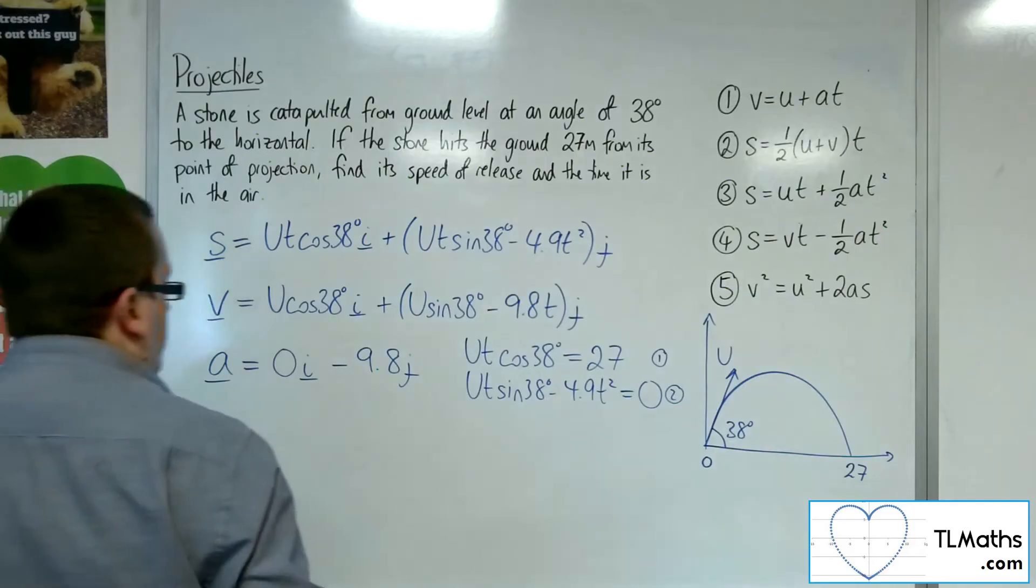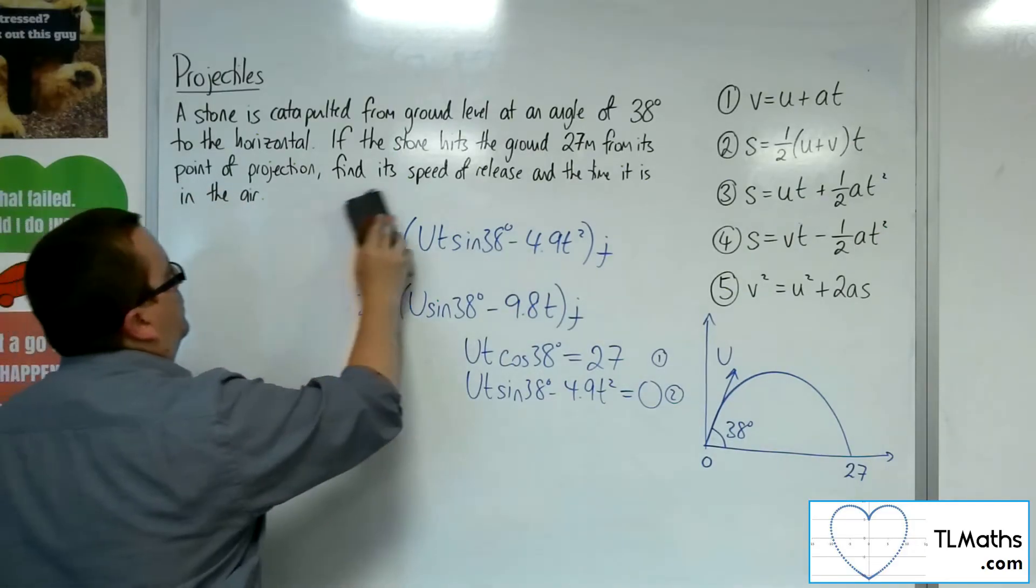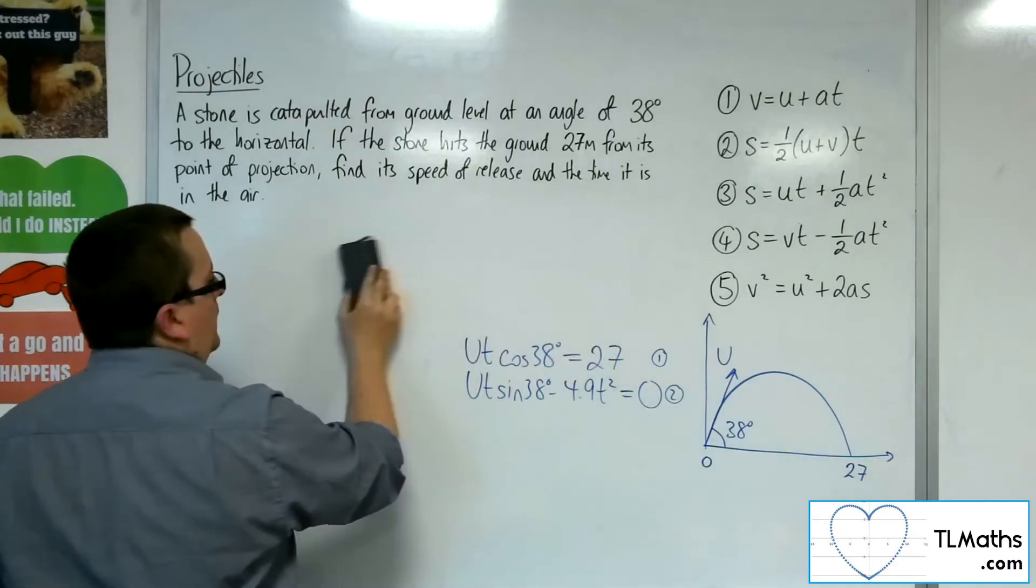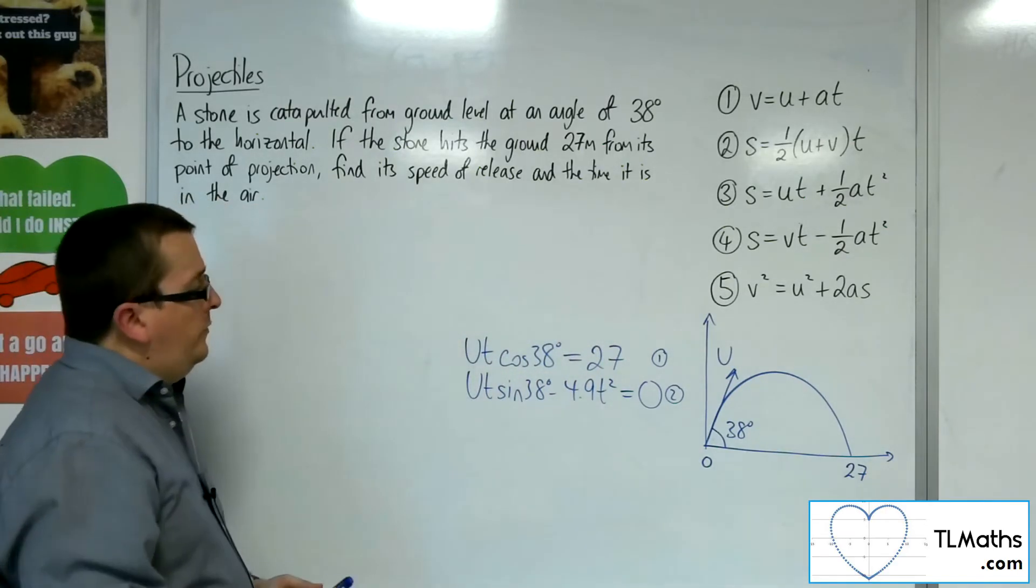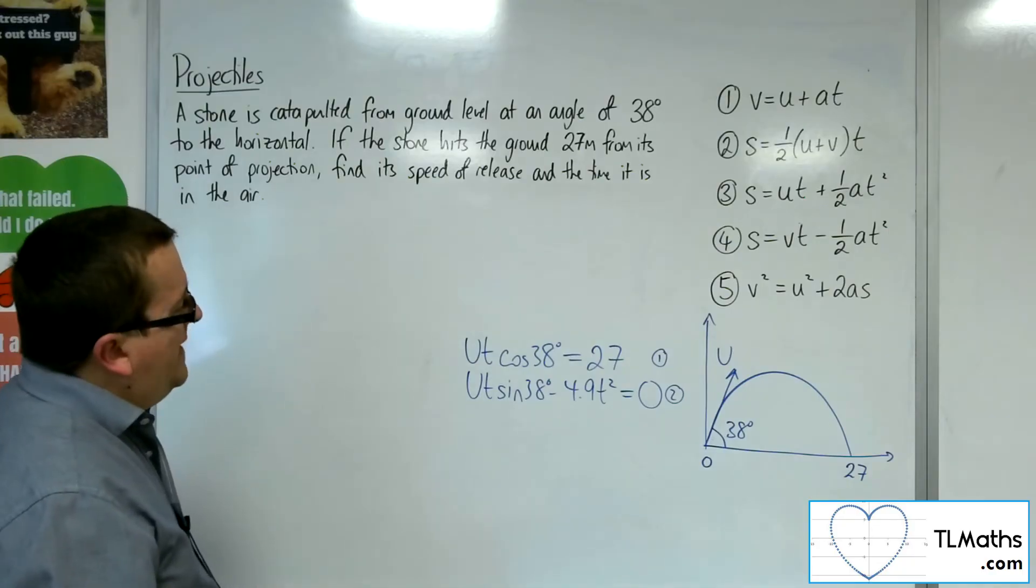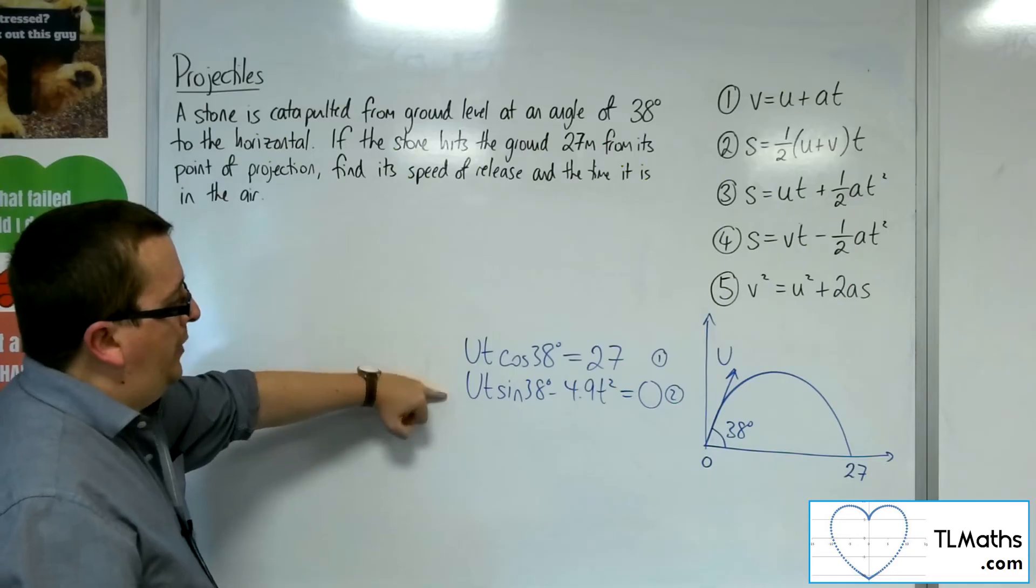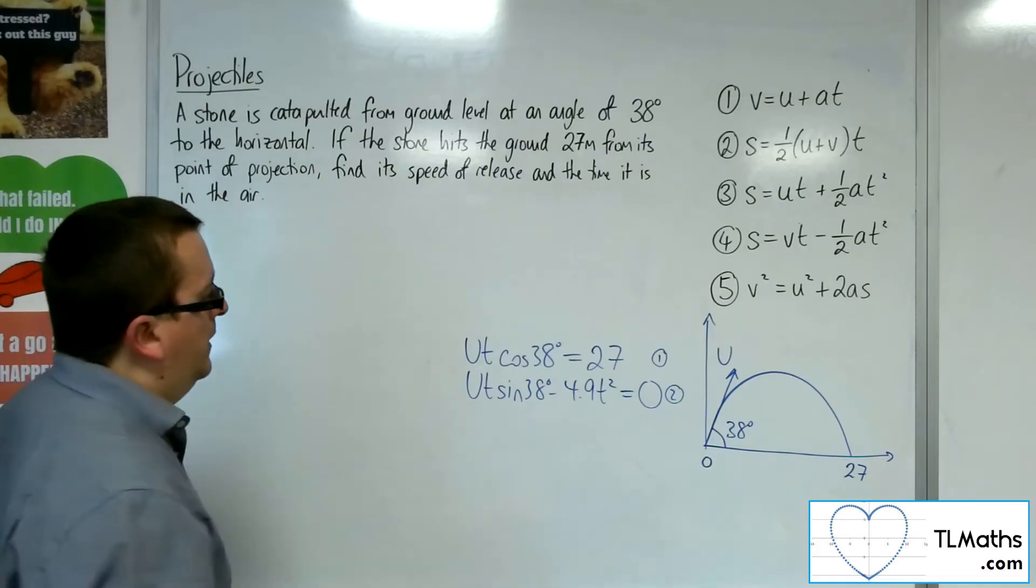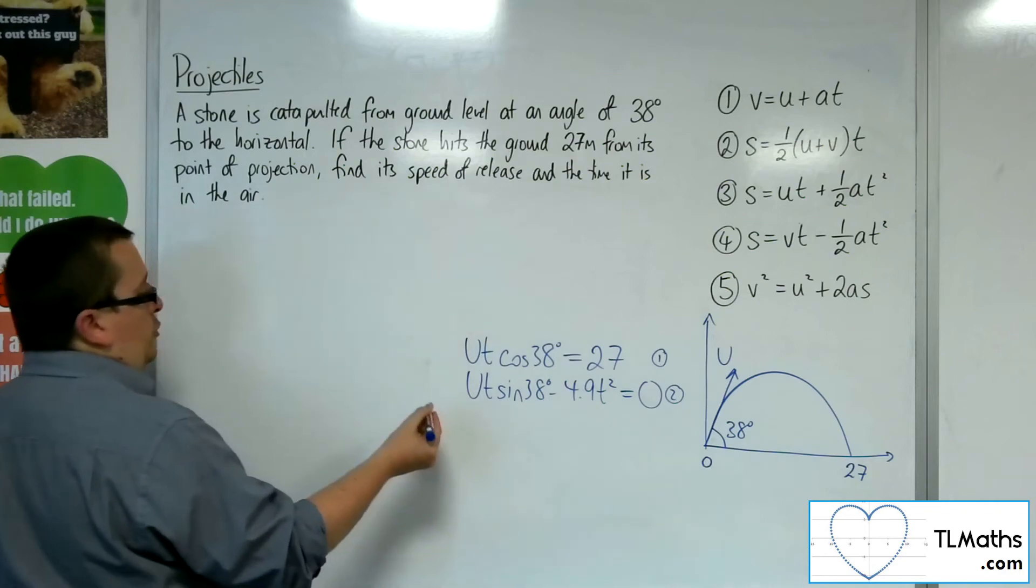To work out the t, the time that it's in the air, and u, that initial speed. So what I'm going to do is I'm going to rearrange equation 1 to get u equals, and then I'm going to substitute it into equation number 2. So I'm going to work out the time first, and then I'm going to come back and work out the initial speed.